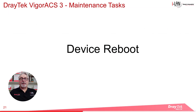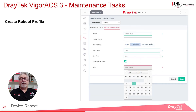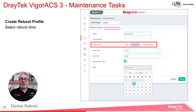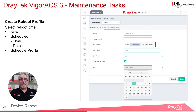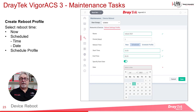The next item we'll look at is Device Reboot. Device Reboot allows you to reboot selected CPE devices according to a time schedule. You might want to do that to clear the router memory and restart internet connections and so on. The first step is to create a reboot profile. There are three options for reboot time: Now, Scheduled, or Scheduled Profile. For Scheduled, you'll need to enter a start and end time as well as a date if needed, and how often you want it to happen.